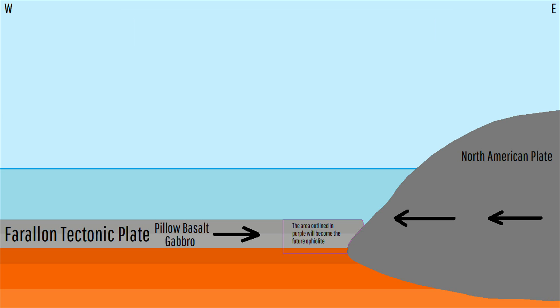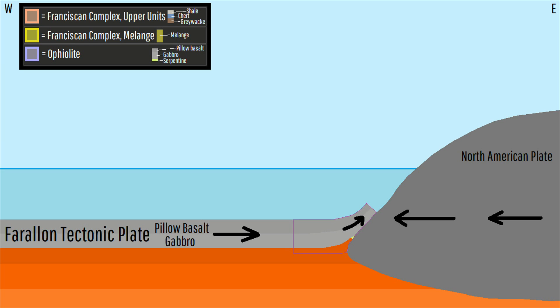At the time, the North American plate was drifting westwards. When the two plates initially collided, something strange occurred. Instead of subducting underneath the North American plate, a section of the Farallon plate including a portion of upper mantle rock was forced upwards and onto this plate in a process known as obduction.